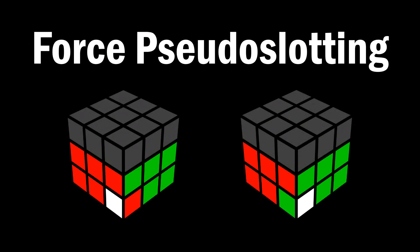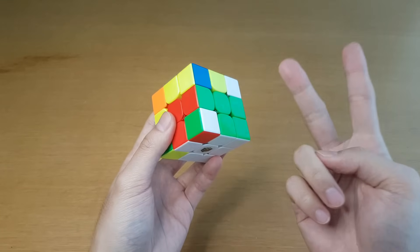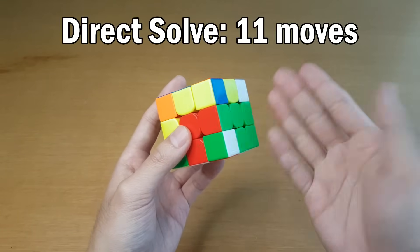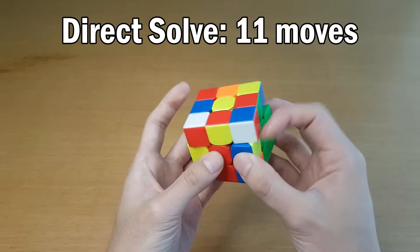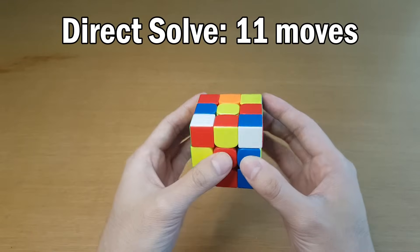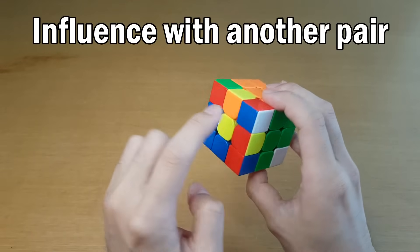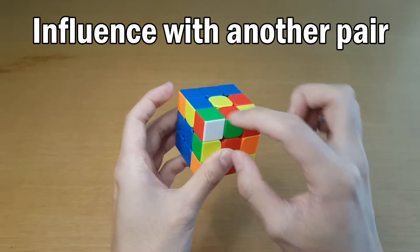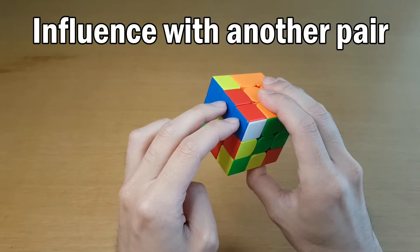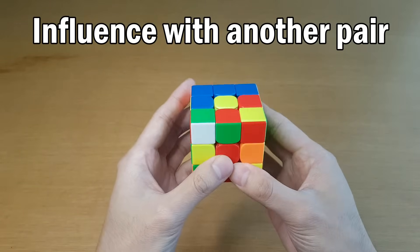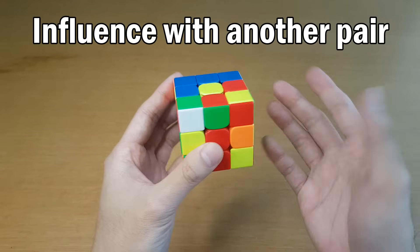This is the first F2L case we will be looking at. Now, the two ways we generally solve this, either just directly solve it, which is like take it out, solve whatever case you get. It's like 11 moves, not great. Or when you pair up the next case, you can actually take it out during that step. So you're kind of overlapping steps. And that can be good, but it's not always something you can do.